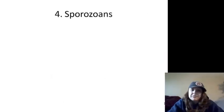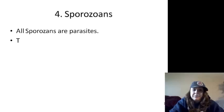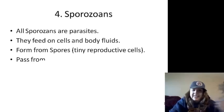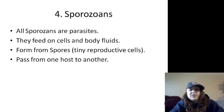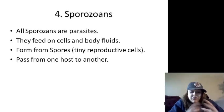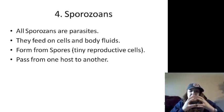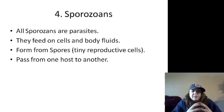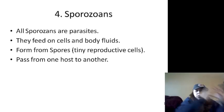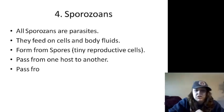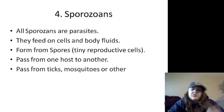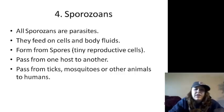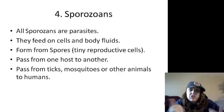Sporozoans — these guys are not mutualistic. All of them are parasites. They feed on cells, body fluids. They form spores, which are tiny reproductive cells that pass from one host to another. They pass from ticks, mosquitoes, and other animals to humans.